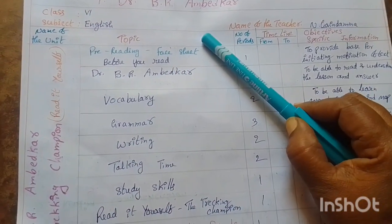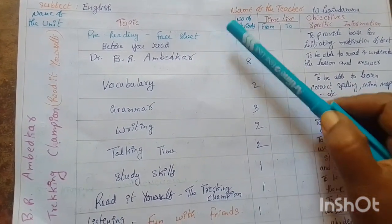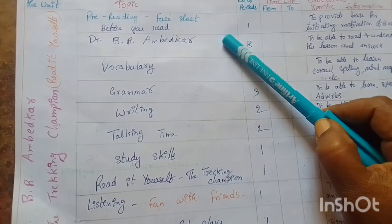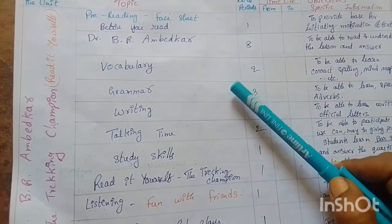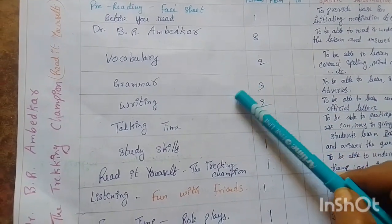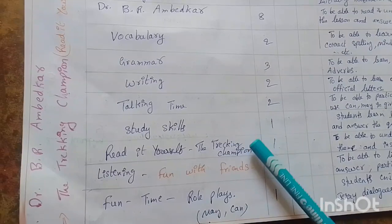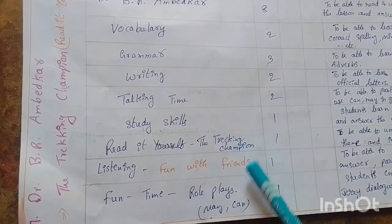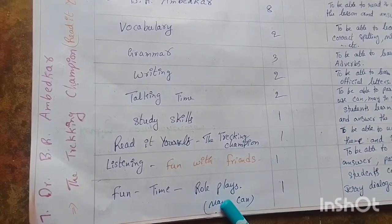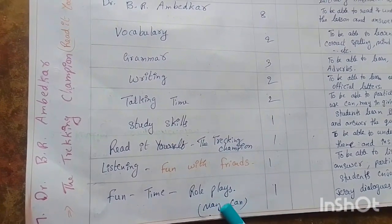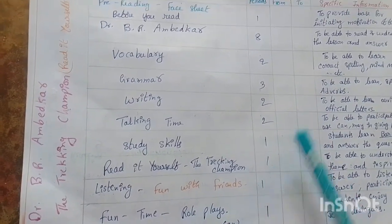The topic sections include the pre-reading phase sheet for the Dr. B.R. Ambedkar lesson, vocabulary, grammar, writing part, talking time, study skills, read it yourself, listening and fun time, and fun time on role plays and conversations.